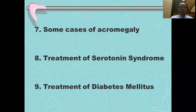Besides symptomatic treatment, you may also give benzodiazepines like diazepam along with D2 receptor agonists. Last of all, bromocriptine and D2 receptor agonists are also found to be useful in the treatment of type 2 diabetes. The exact mechanism is not known; however, it does not have that much efficacy — it only decreases HbA1c levels by 0.5%.